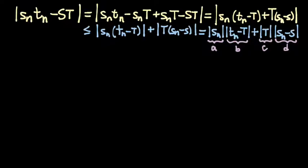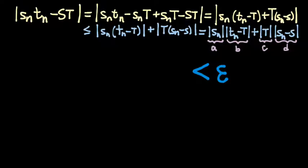Our job now, to finish our scratch work, is to figure out how we know we can have control over all four of these pieces such that the whole thing is somehow less than epsilon. We have four pieces to control so that the whole sum, A times B plus C times D, is made less than epsilon. Let's go through and ask for each piece how we can control it, starting with piece D.